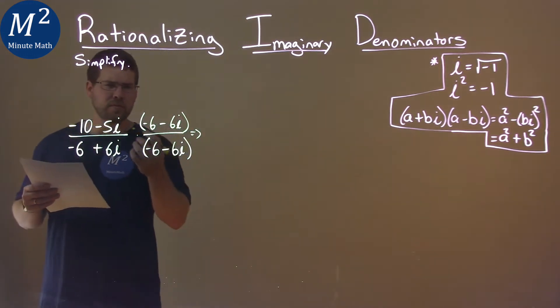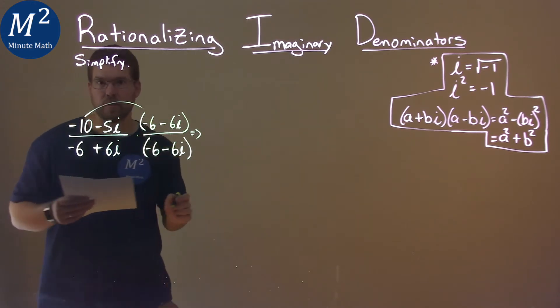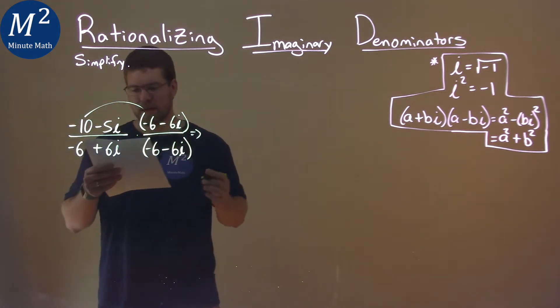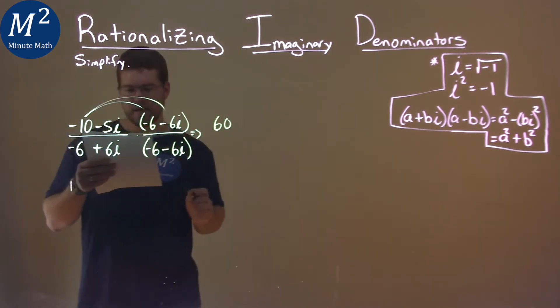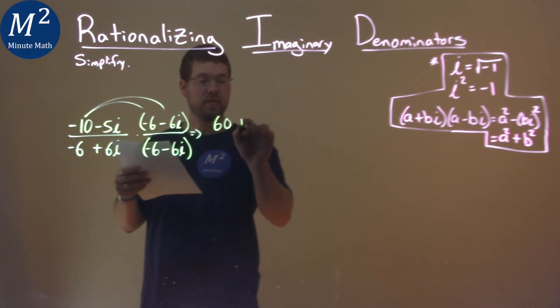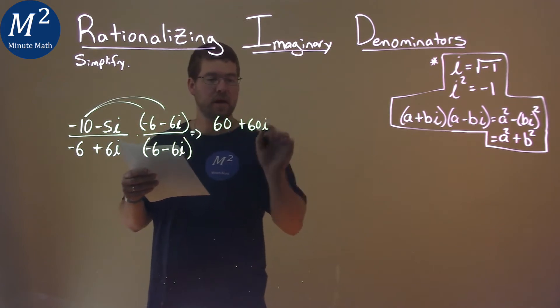What happens? Take our time for the numerator - we've got to FOIL it. Negative 10 times negative 6 is positive 60. Negative 10 times minus 6i is positive 60i.